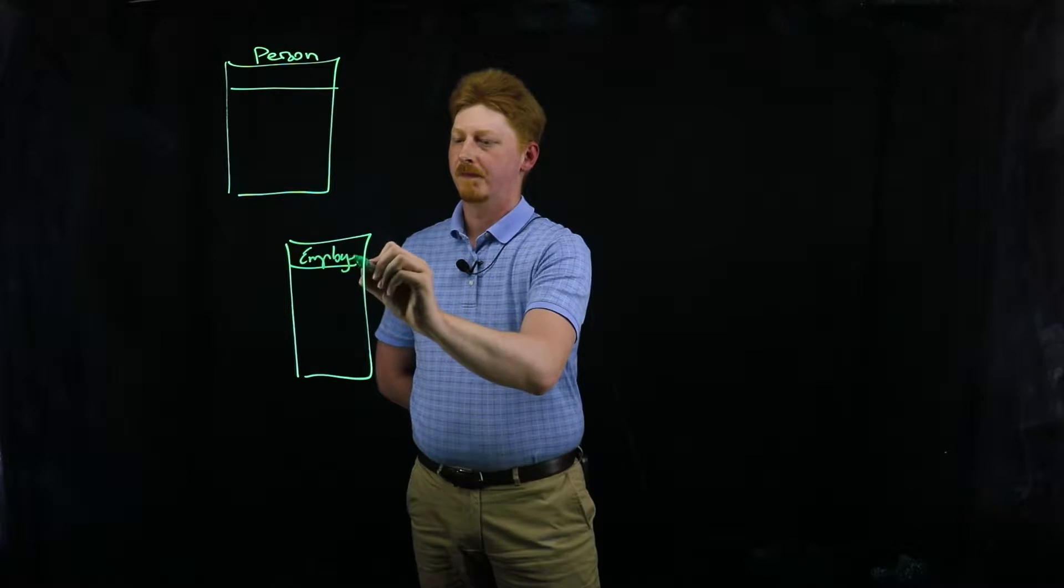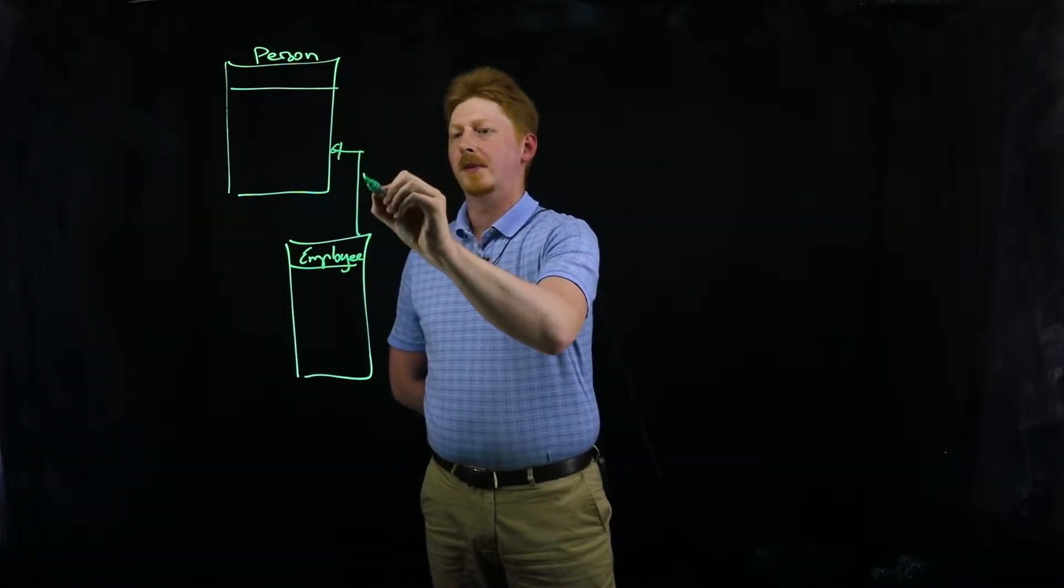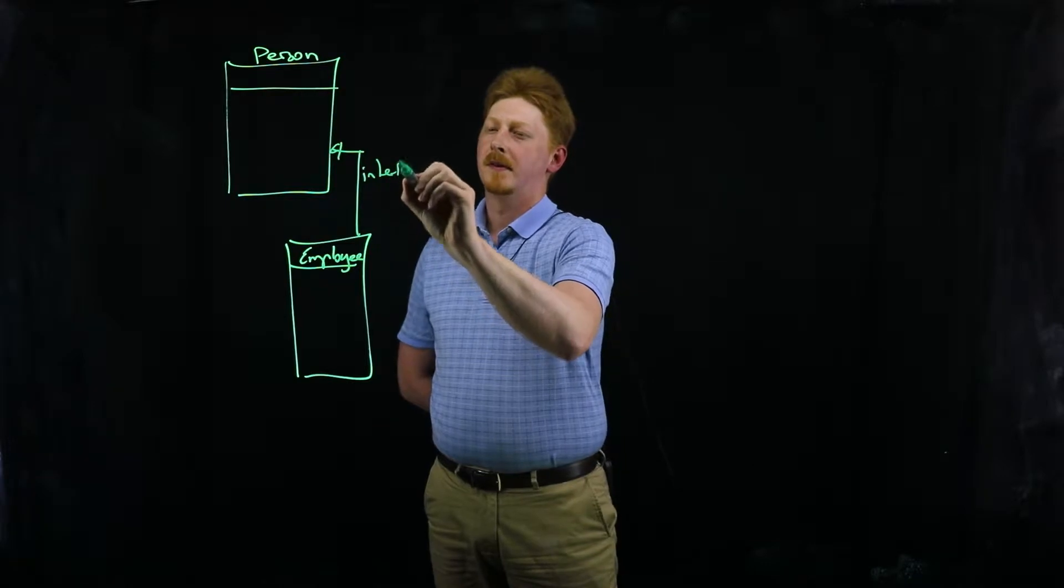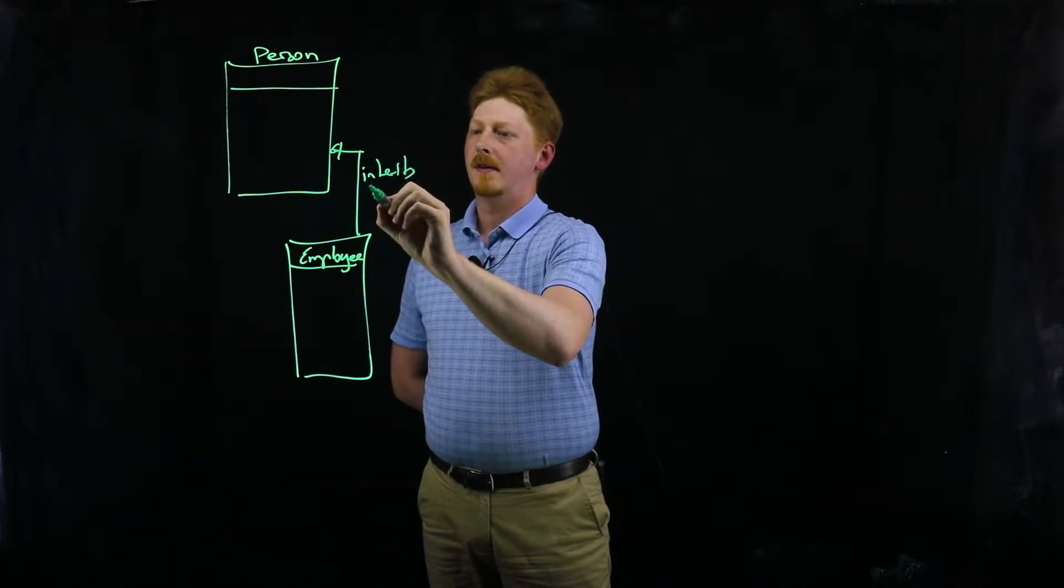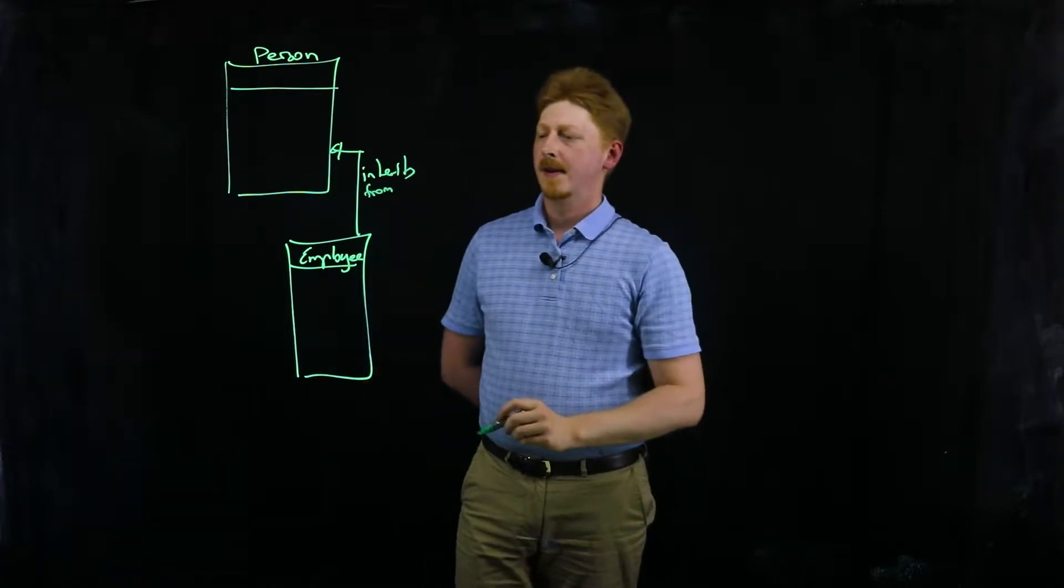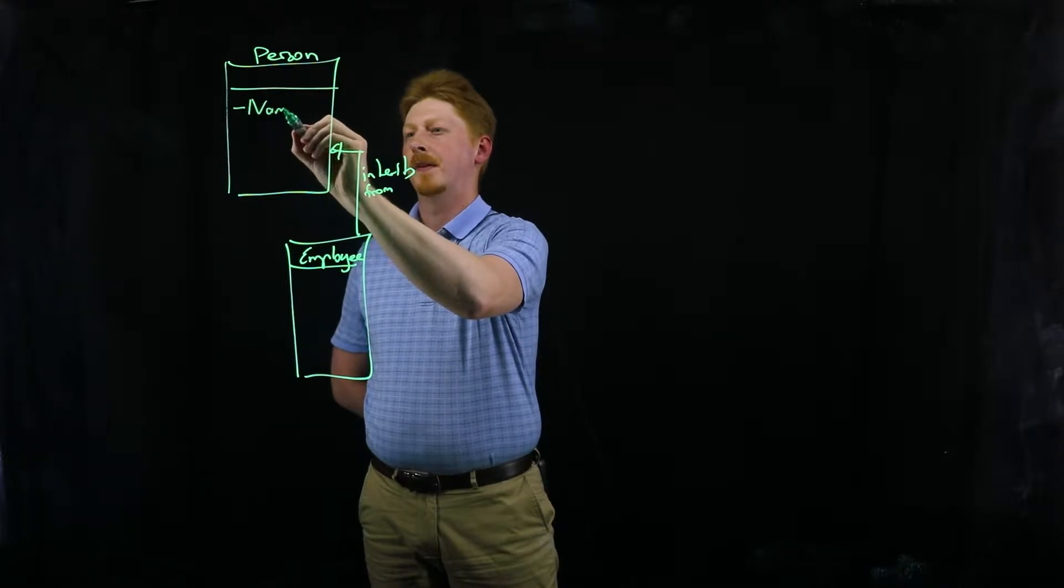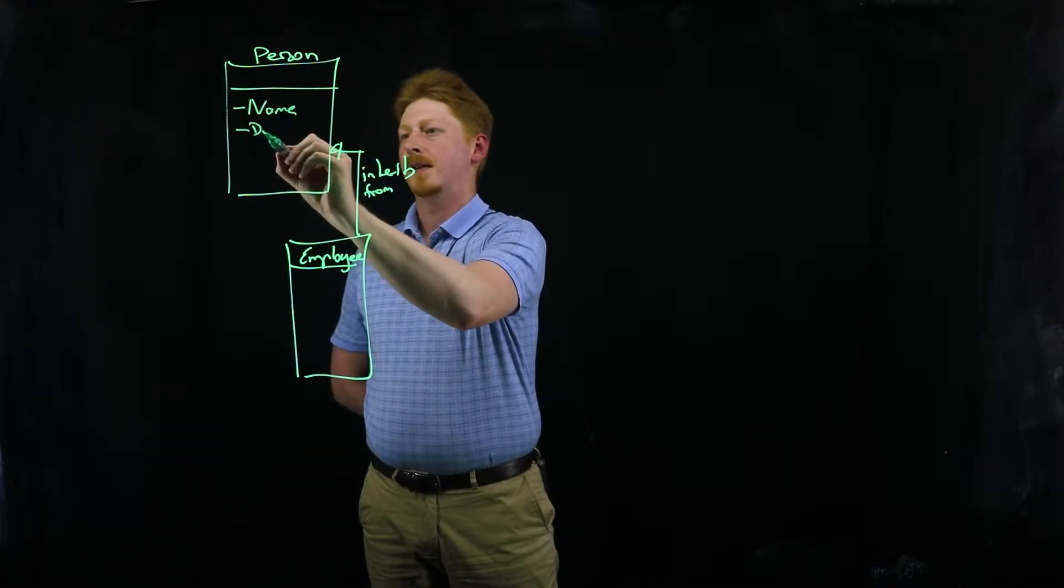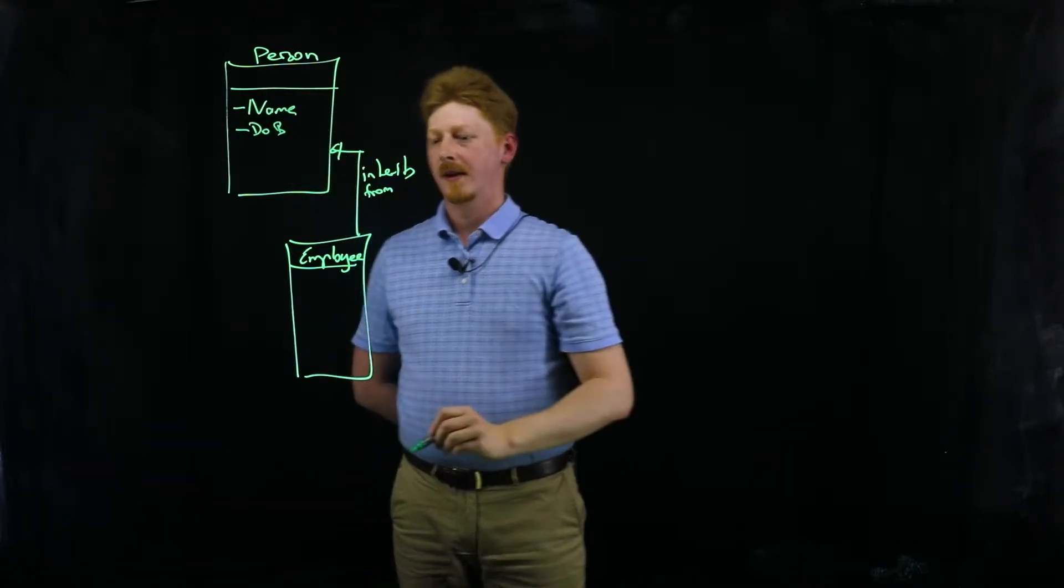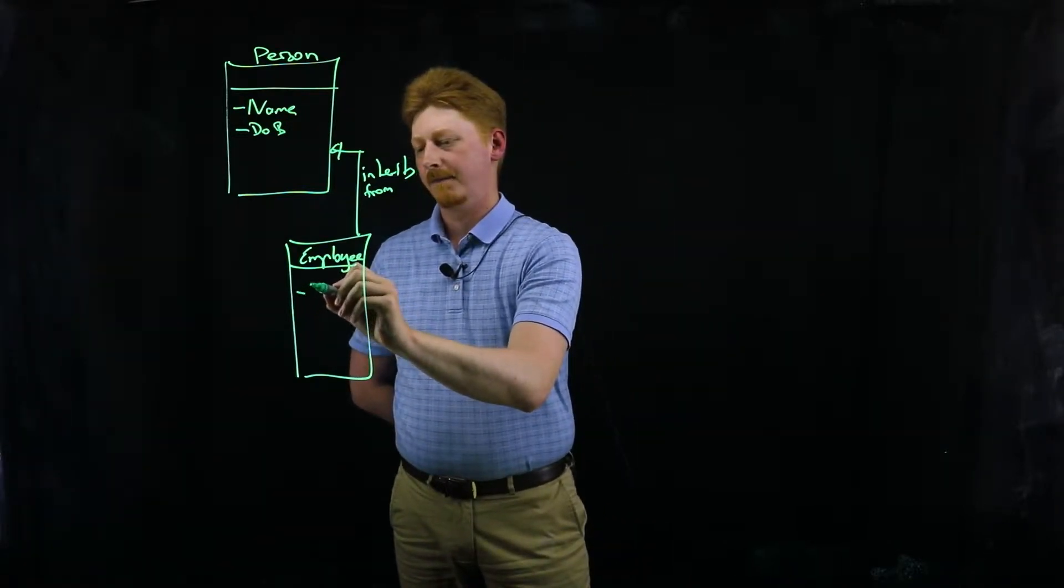If the subclass inherits from the person class, it inherits all the properties that a person might have, like a name and a date of birth. The employee might add additional properties, let's say a company.